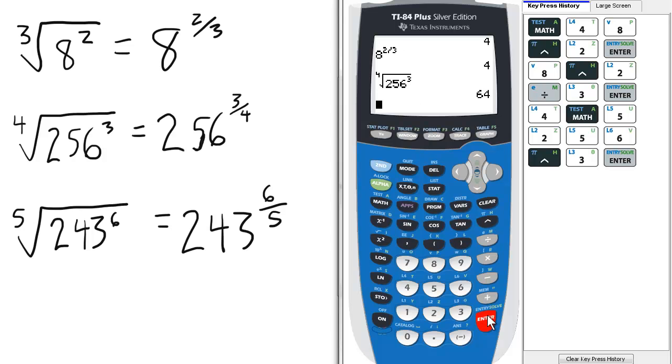Now, using fractional exponents, we just raise 256 to the 3 divided by 4, so 256 to the 3 fourths.